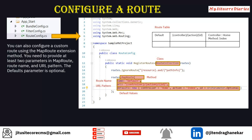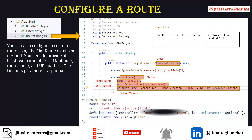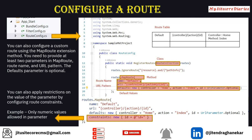In MapRoute you can have multiple configurations. You can also configure a custom route using the MapRoute extension method — you need to provide at least two parameters: name and URL. The default parameter is optional, so you can have different expressions like controller/action/id or others. Another thing in the RouteConfig is a constraint. You can apply a constraint — for example, if for a particular action you want only a numerical value for the id, you can set a constraint that specifies a numerical value. You can apply restrictions on parameter values by configuring the route constraint.